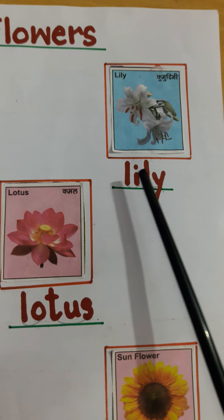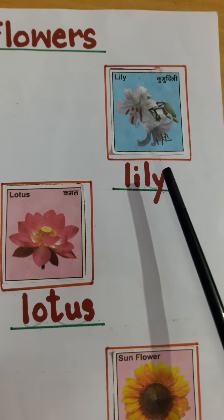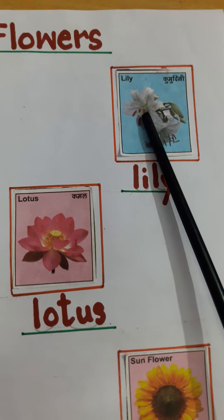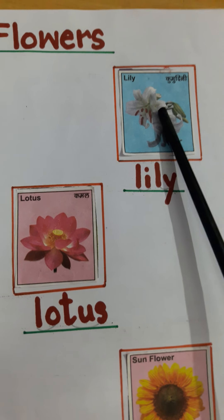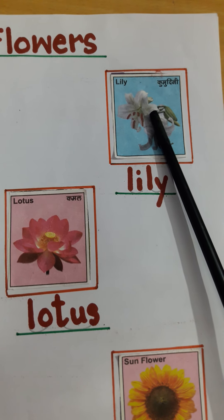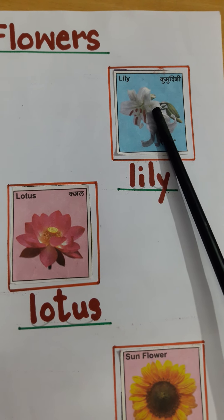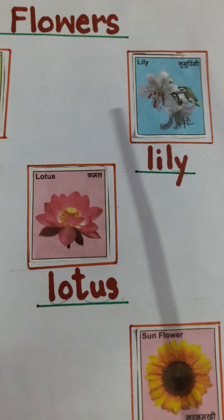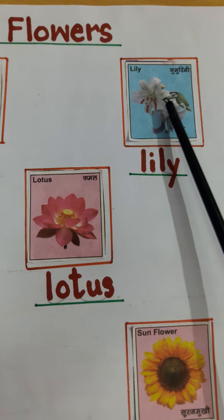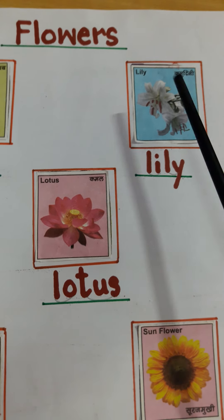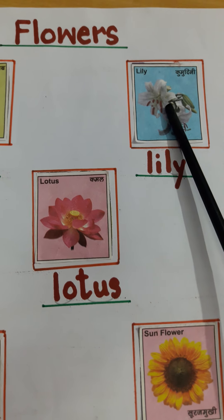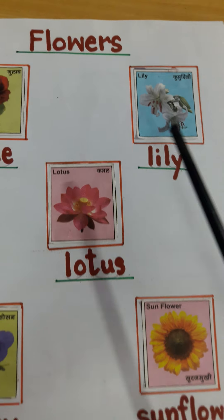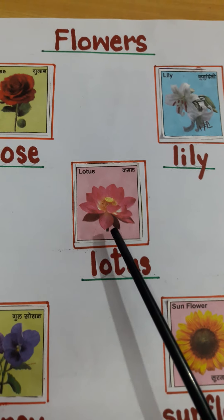L-I-L-Y. Lily. White color ke hota hai. Flowers mein iska jo bhi hai, petals jo hota hai, woh kam hota hai. Iske baad hai Lotus.